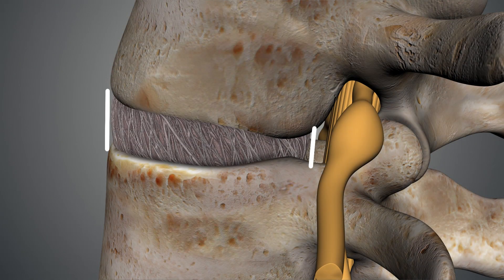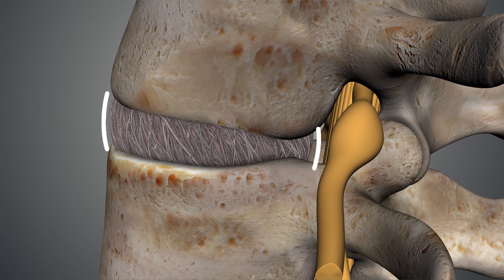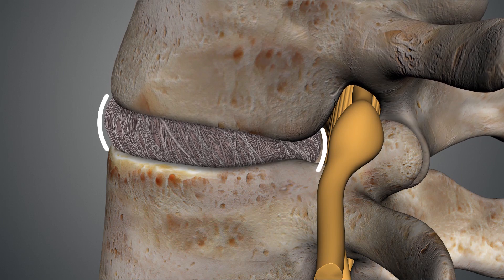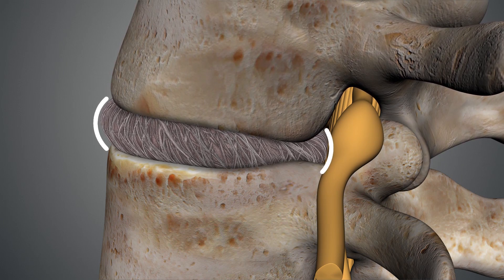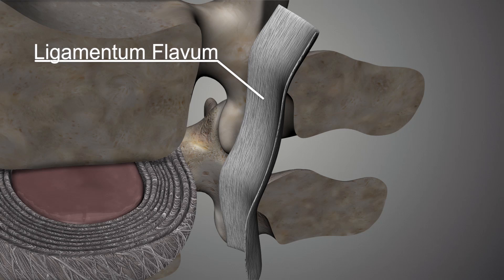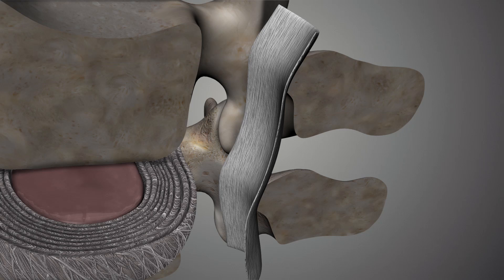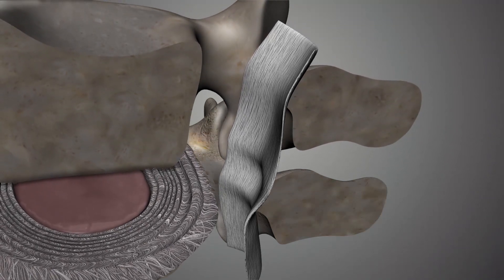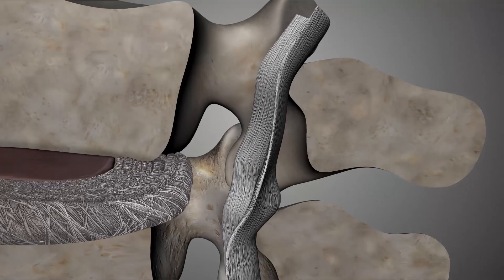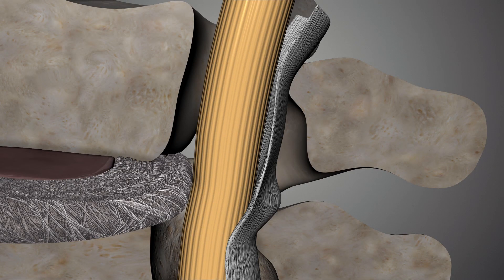The process of developing spinal stenosis is related to a combination of disc degeneration and arthritis. As the discs narrow, the outer strong fibers — the annulus — and other associated ligaments such as the posterior longitudinal ligament and the ligamentum flavum are not stretched to their normal orientation. This causes a broadening and widening of these ligaments, which typically encase the spinal components.